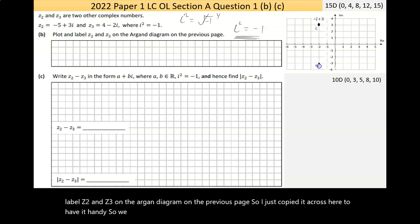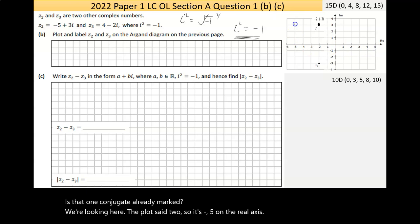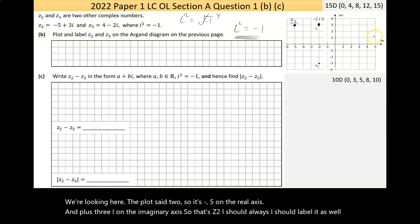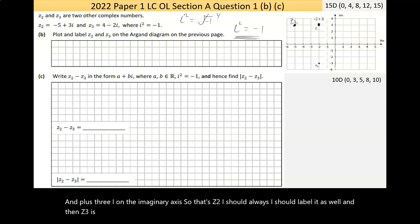Following from that, if I was to square both sides, I'd be left with i squared. The square here cancels the square root and I'm left with negative 1, and that's where that statement. In fact, this is probably the most useful thing we'll use in problems. Now part B then says plot and label Z2 and Z3 on the Argand diagram on the previous page. So I just copied it across here to have it handy. So we have Z1 and we have Z1 conjugate already marked.